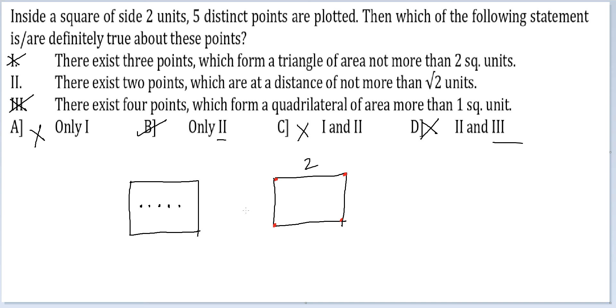Now when you place the 5th point, anywhere you place it, the distance would be less than root 2 or exactly equal to root 2. And it would be exactly equal to root 2 when you place it right at the meeting point of the diagonals.